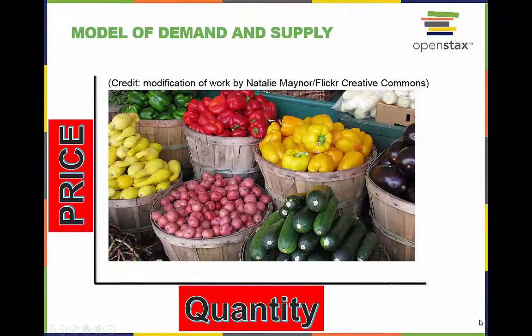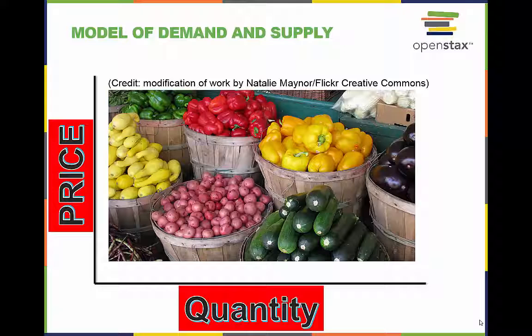This chapter introduces the economic model of demand and supply, one of the most powerful models in all of economics. The discussion begins with examining how demand and supply determine the price and the quantity sold in the market for goods and services, and how changes in demand and supply lead to changes in prices and quantities.